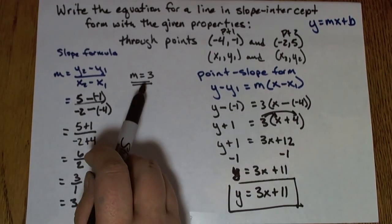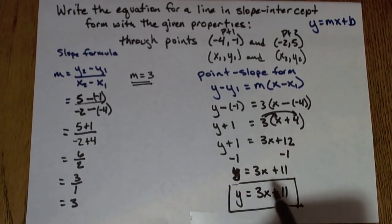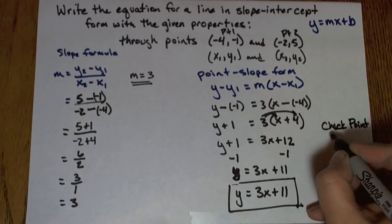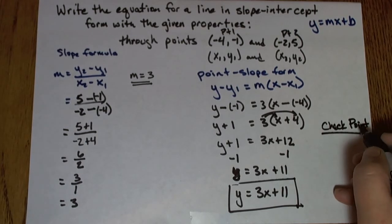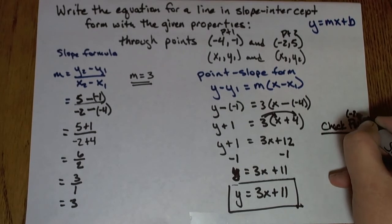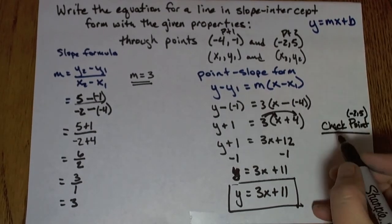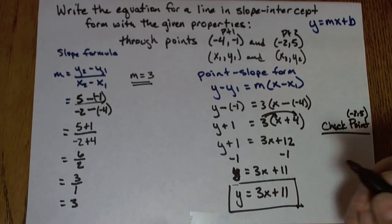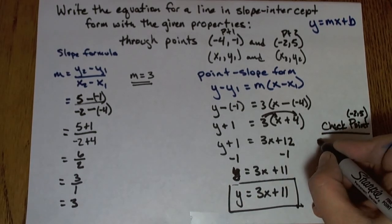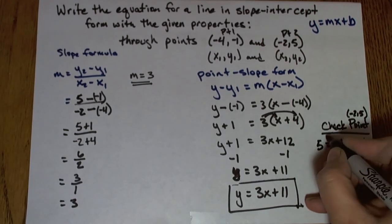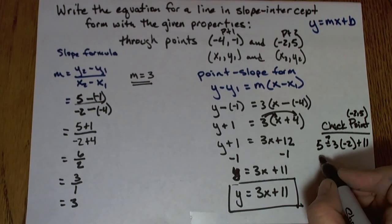It has a slope of 3. If I wanted to double check that, I could plug one of my points into it and make sure it really was a solution. So I could check a point and I'm going to check maybe the point (-2, 5). I'll just pick that one as my check. So I'm going to put 5 in for y, negative 2 for x and make sure it's true. So I'd have 5 equals 3 times negative 2 plus 11. Putting a little question mark, so that's a check.